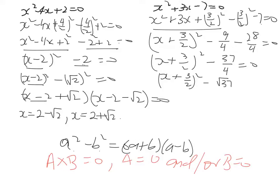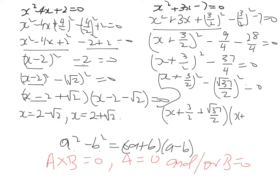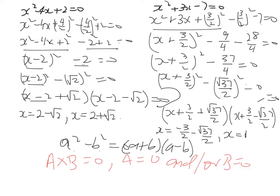Now we've got x plus 3 over 2, all squared, minus the square root of 37 over 2, all squared, equals 0. So we'll have x plus 3 over 2 plus the square root of 37 over 2, and x plus 3 over 2 minus the square root of 37 over 2, and that equals 0. So now we're left with x equals negative 3 over 2 minus root 37 over 2, and x equals root 37 over 2 minus 3 over 2.